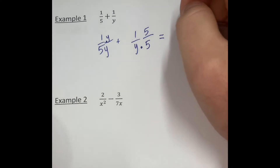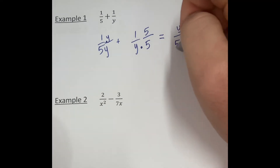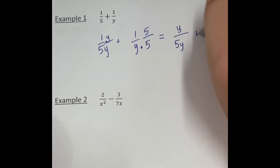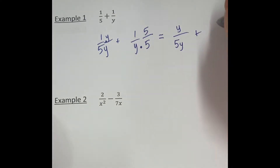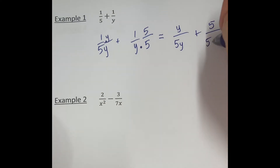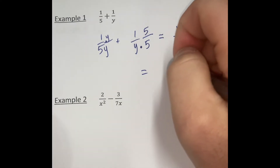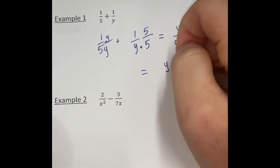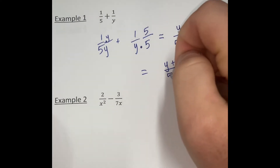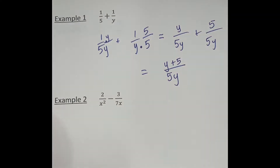Now we're looking at 1 times y is y over 5y, plus 1 times 5 which is 5 over 5y. And now we can combine those. When we combine those, we get y plus 5 over 5y.